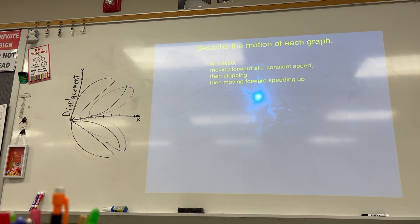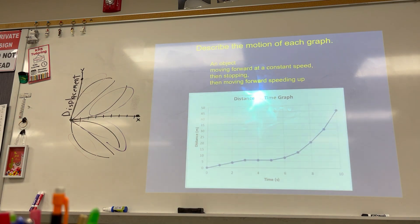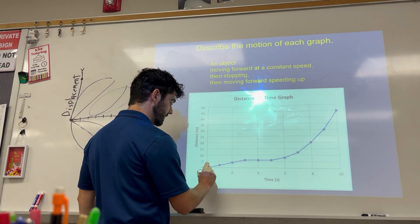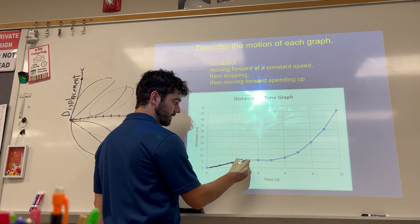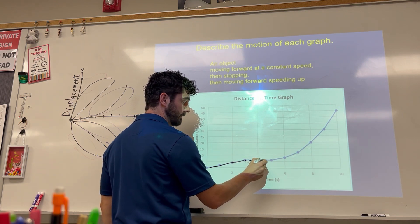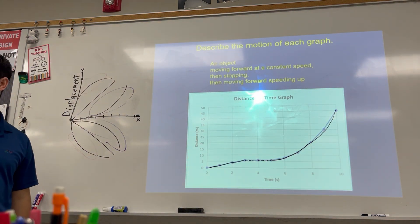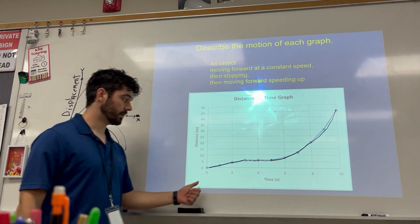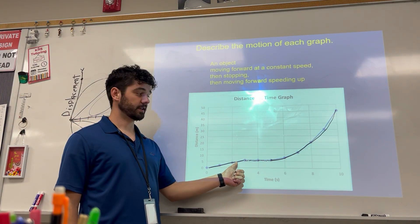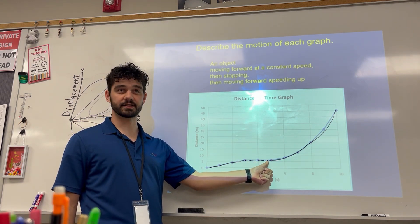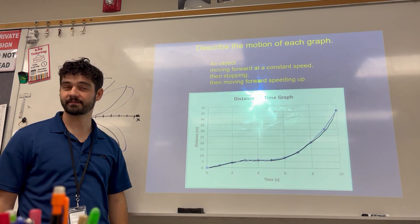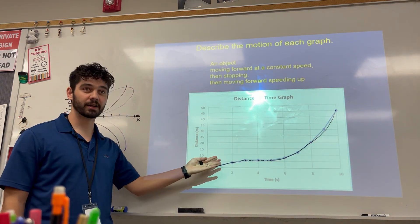If I'm going forward at constant speed, what does that look like? A straight line. Then I stop — so time keeps moving forward, so I have a flat section. Then if I speed away, the graph curves getting steeper. So: constant speed is a straight line going up, stopping gives a flat section, then speeding away makes the graph get steeper. Like I'm walking down the street at constant speed, I stop to tie my shoe, and then a dog jumps the fence and starts chasing me, so I speed away and get faster as I go.